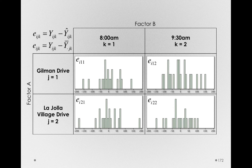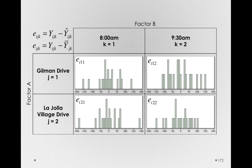Here are the histograms of error within each of the group combinations. If we look at Gilman Drive at 8am, all I've done here is center the individuals around that group and show their deviations. In each of these groups we have a measure of prevailing error. We'll make an assumption that each of these distributions are estimates of the same population variance — that is, the variability around each of these group or treatment means is really the same — which enables us to use all the observations, all the EIJKs, in a unified estimate of population variance.